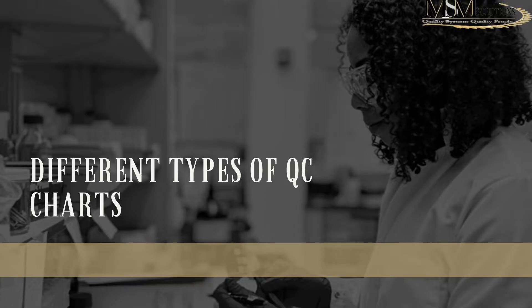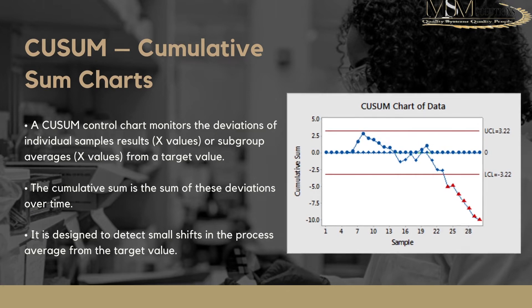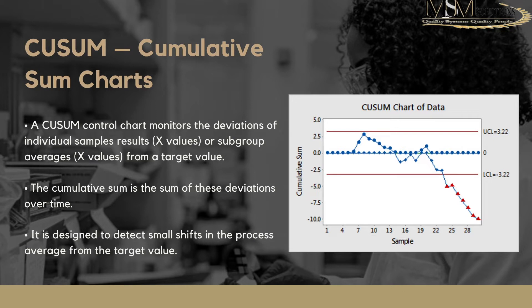There are different types of QC charts. One of the charts used in monitoring QCs is a CUSUM chart — a cumulative sum chart. What a CUSUM chart does is monitor the deviation of individual samples or subgroups from the target value. What you plot is the cumulative sum, which is the sum of these deviations over time. This is essentially used to measure and monitor if your process is drifting away from the mean.